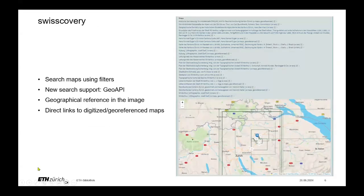Then there's Swisscovery, which you all know — it's our catalog. From there you can search for maps using the map filter. A few weeks ago we implemented a new search support called Geo API, which you can see on the right side. It allows geographical referencing directly in Swisscovery.